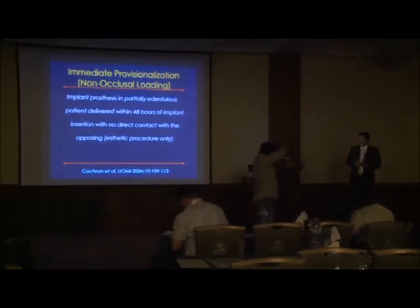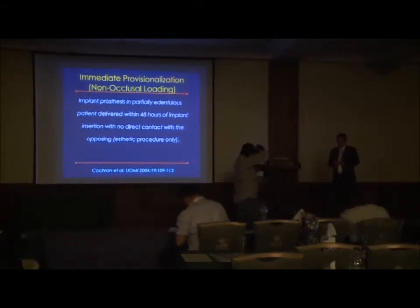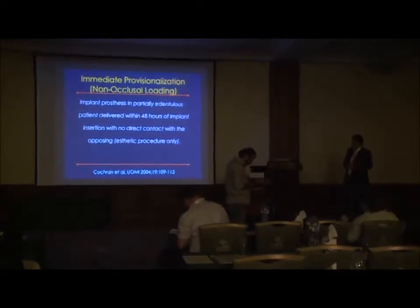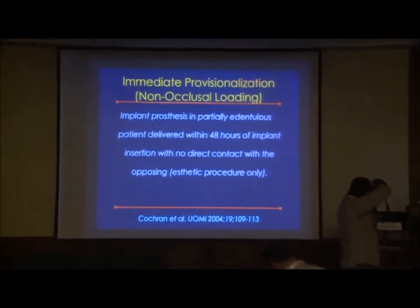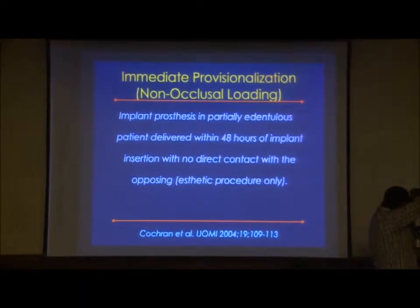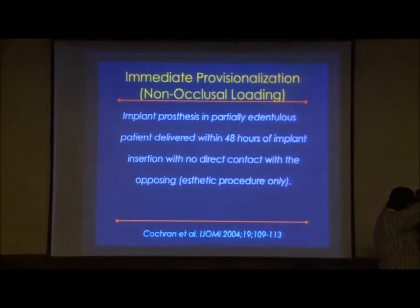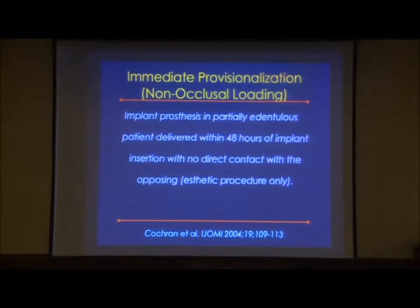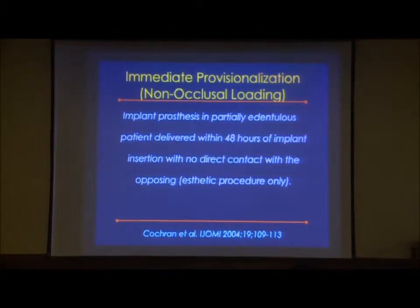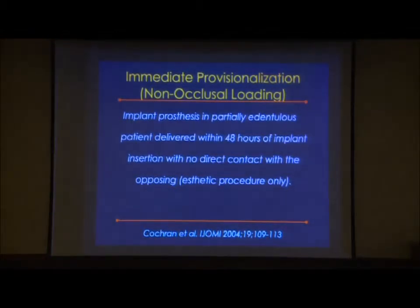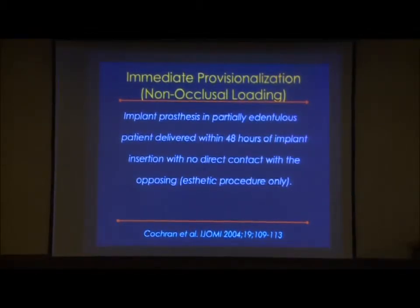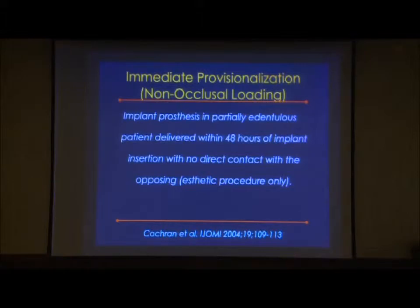Cochrane defined it in 2004: immediate provisionalization, or immediate non-occlusal loading, is when the prosthesis is placed within 48 hours. Specifically, an implant prosthesis in a partially edentulous patient delivered within 48 hours of implant placement with no direct occlusal contact — it is just for aesthetic purposes. The 48-hour window gives time for the lab to finish the case. If more than two days pass, it is hard to still call it immediate provisionalization.